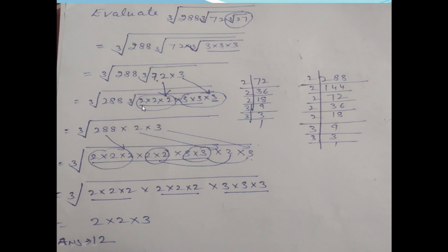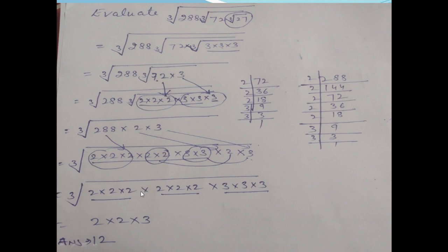Write all prime factors of 72 in cube root. You have groups giving 2 and 3. Now find prime factors of 288 and write them all. You have 2s and 3s. Making the group of 3: taking help of existing groups, you get the required groups. Take one 2 and one 3 from the respective groups. Multiply these numbers to get your answer: 12.